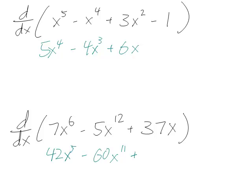You can think of this as 37x to the first, and you're multiplying 1 by 37, and then you get x to the 0, which would be 1, so it will be 37.